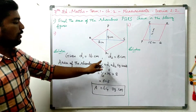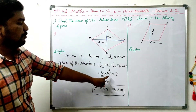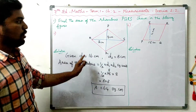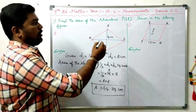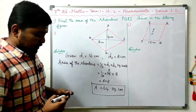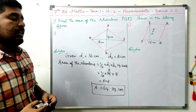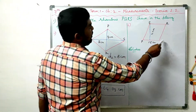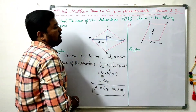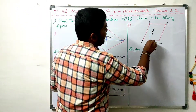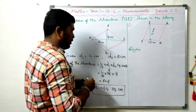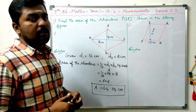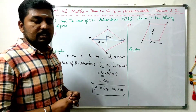Now we have the second rhombus PQRS, which uses base and height. The base PQ is 15 cm. The height is the perpendicular line, which is 90 degrees, and its length is 11 cm. So the formula using base and height is: Area = B into H square units.